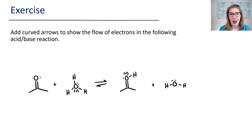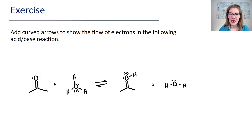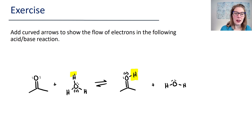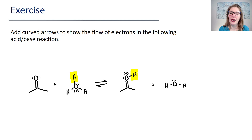Here I have an exercise I want you to try. Add curved arrows to show the flow of electrons in this acid-base reaction. Pause for a moment and give it a try. If you need a hint, look for where the hydrogen is being added — there's a new hydrogen being added to this oxygen. Notice how we lost a hydrogen on our H3O+. Consider what pair of electrons is going to form a bond with that highlighted hydrogen. Pause again and see if you can determine the correct arrows to add.